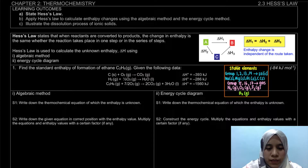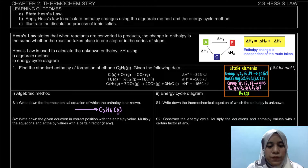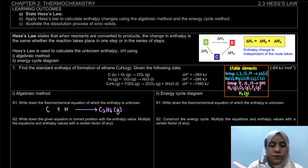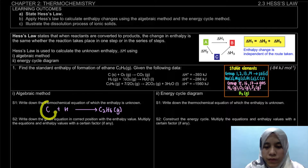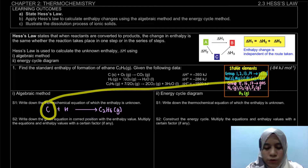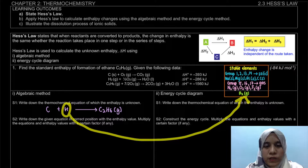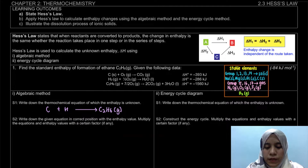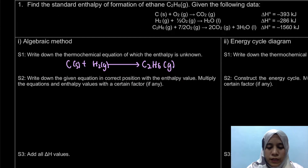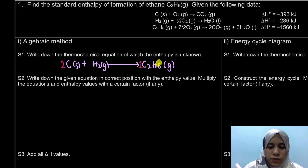The product is C2H6 gas. The stable elements are carbon in solid form — since carbon is in group 14, its stable state is solid — and hydrogen as H2 gas. Write down the stable elements with the correct formula and state. Then balance: since there are 2 carbons in the product, we need 2C; since there are 6 hydrogens, we need 3H2. That's the first step.